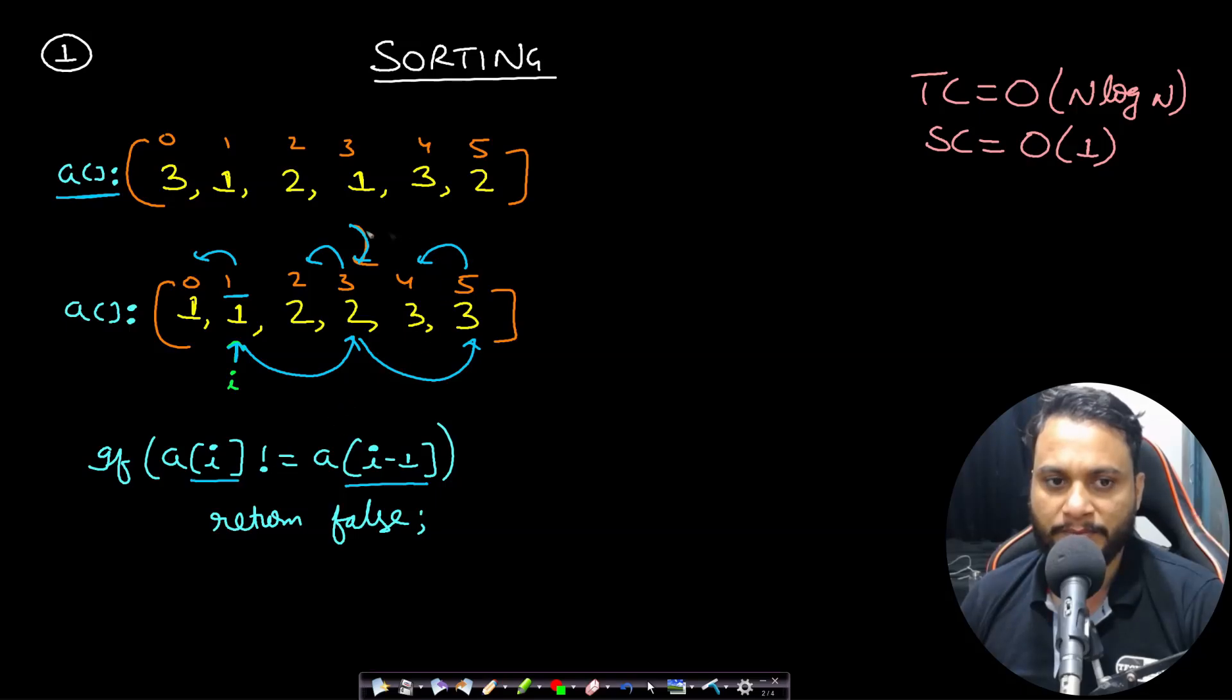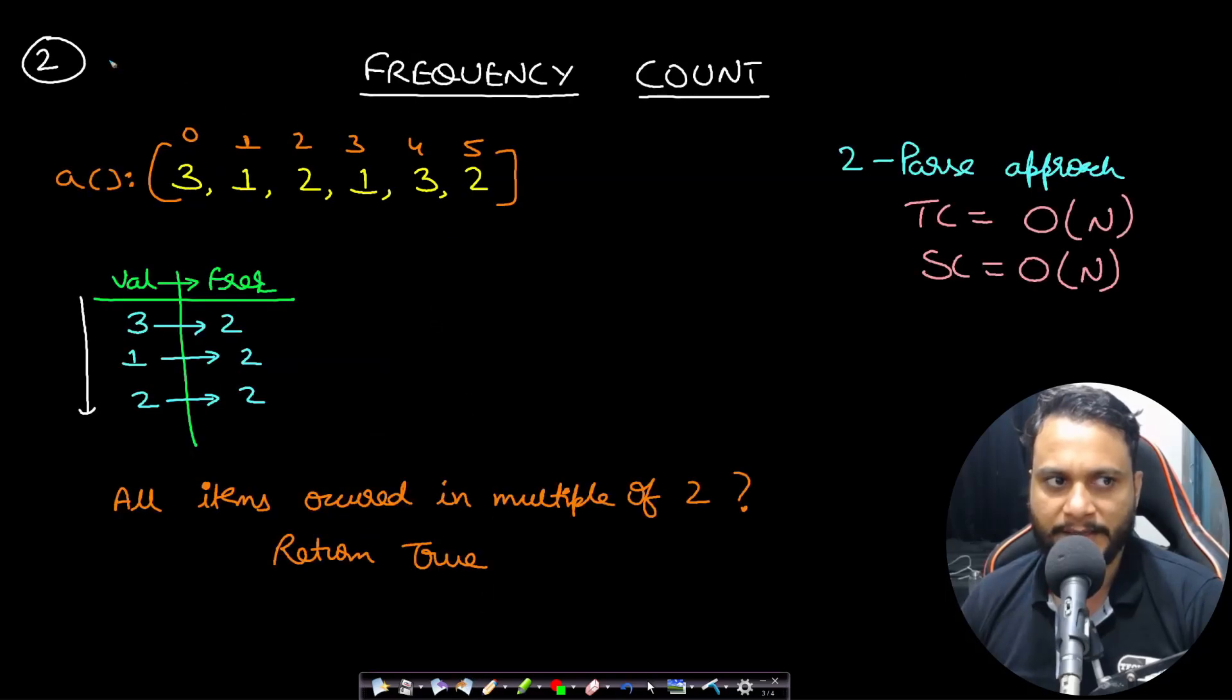In that way you can decide if you can pair up the entire array or not. If at any point you find that array at i is not equal to array at i minus one, that means the pairing is not possible. The sorting algorithm will take n log n time and after that a single pass will be order of n. Therefore the time complexity will be n log n and space complexity order of one.